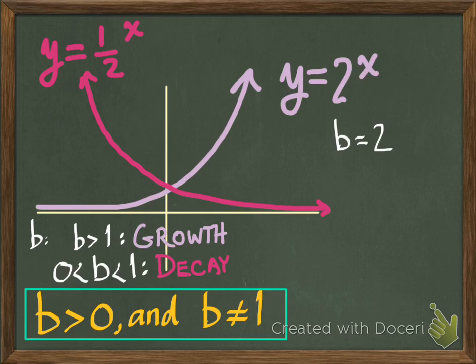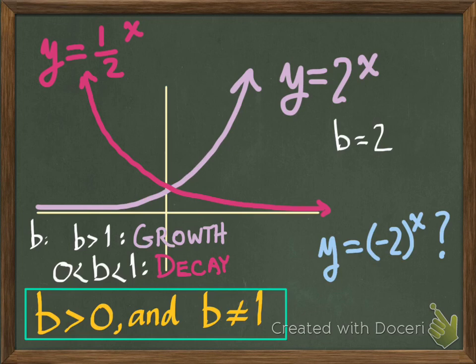Now, what about a base that's negative? Negative 2 to the x power, for example. Well, I'm going to leave it up to you to choose some kind of graphing tool and mess around with that. See what happens. See if you can explain what happens. It's very interesting, but once again, we are just not going to have any bases that are negative numbers. Okay, that's enough for this first video. Hope you enjoyed that. Stay tuned for part two coming up.